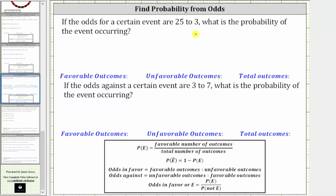If the odds for a certain event are 25 to three, what is the probability of the event occurring? When we're given odds, we assume they are odds in favor.